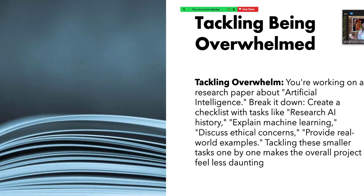Tackling being overwhelmed. You're working on a research paper about artificial intelligence. Here you put artificial intelligence in the center of your paper and then you create a checklist with tasks like: research AI history, explain machine learning, discuss ethical concerns, provide real-world examples. Tackling these smaller tasks one by one makes the overall project seem less daunting.